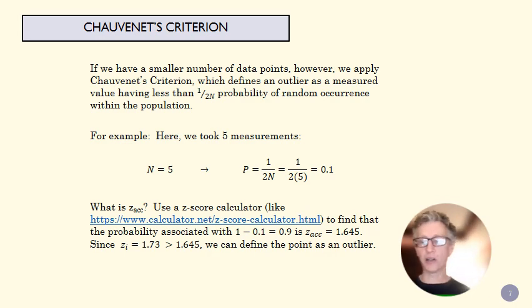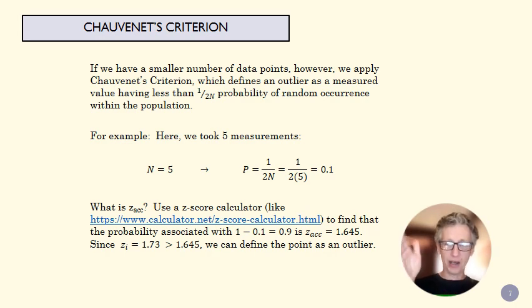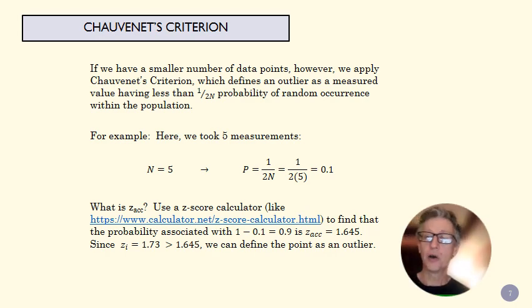I can use my z-score calculator, and I'll look that up on my two-tailed plot. What z-score gives me a 90% chance of being within that range? And that z-score, in this case, and you can check this on a z-score calculator, is 1.645. So, if my z-score is bigger than that, it's farther outside of the range than I'm willing to accept as random chance. And in this case, it is. So we see that 1.73 is bigger than 1.6. And so we can say, oh, that 13.1 is probably an outlier. Let's take it out of our data.